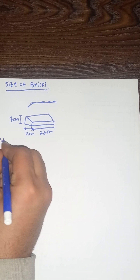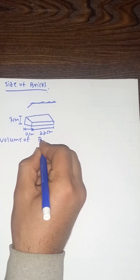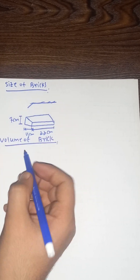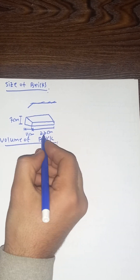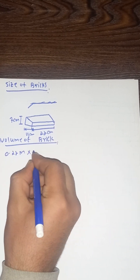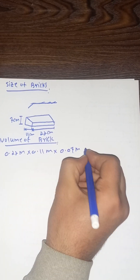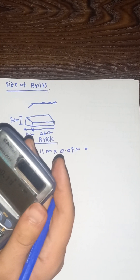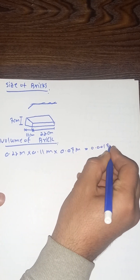Step 5: finding the volume of the brick. We multiply length × width × height. Converting centimeters to meters: 0.22 m × 0.11 m × 0.07 m equals 0.0017 cubic meters.